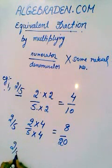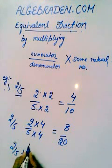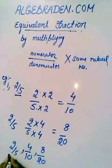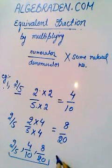Here we can know that 2 over 5, 4 over 10 and 8 over 20, these are equivalent fractions.